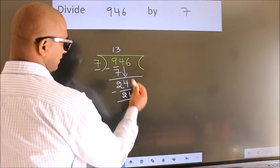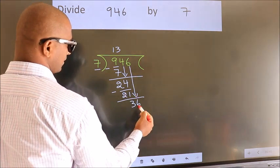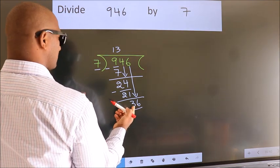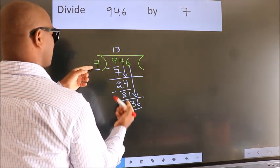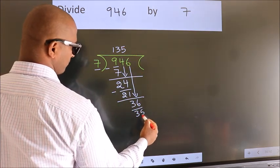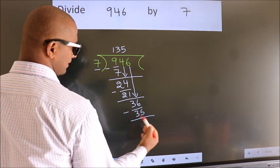After this, bring down the beside number. So 6 down. So 36. A number close to 36 in 7 table is 7 fives, 35. Now we subtract. We get 1.